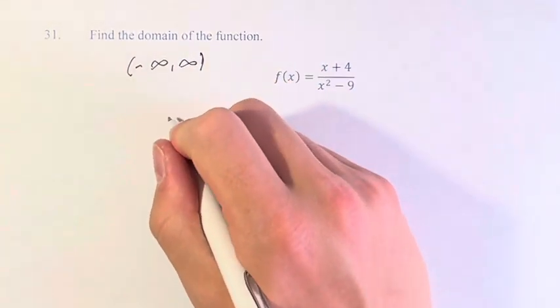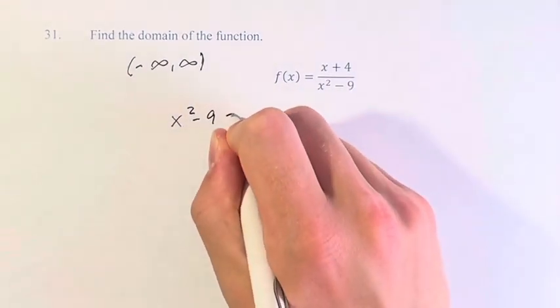So we set the denominator equal to 0. x squared minus 9 equals 0.